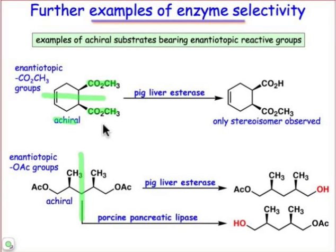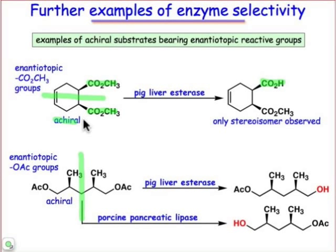In the top case, we have enantiotopic methyl groups. You could do the substitution test, for example, to verify that, or any other approach — you'd see that those methyl esters are enantiotopic. When we subject this molecule to pig liver esterase, which is also an ester-hydrolyzing enzyme, only the ester group on the top undergoes reaction. We take this achiral molecule and convert it into a single stereoisomer of a chiral molecule, hydrolyzing the methyl group off of the top.